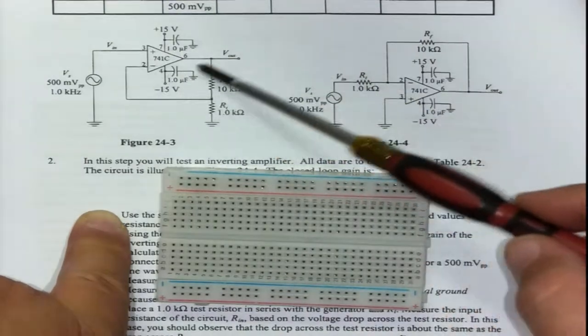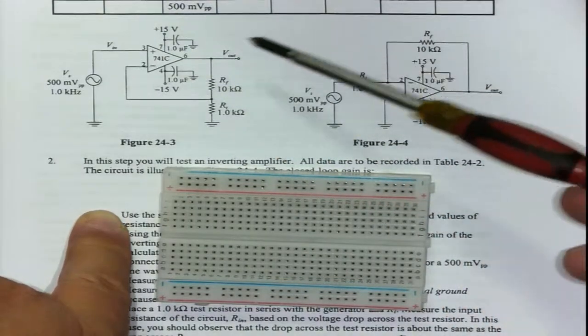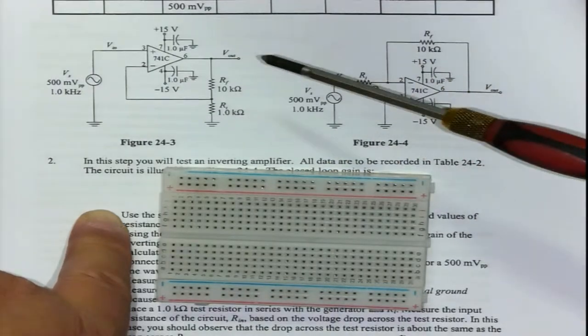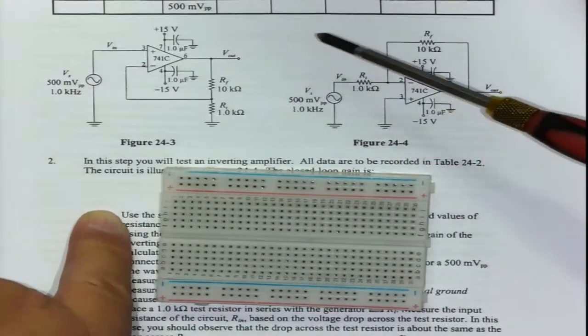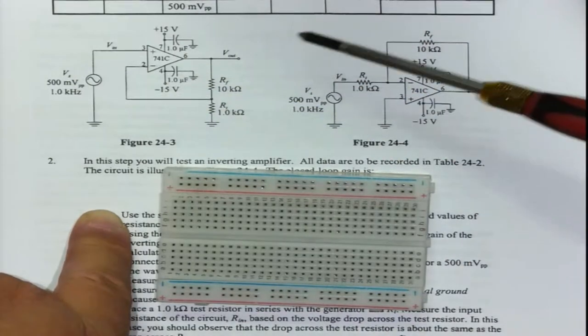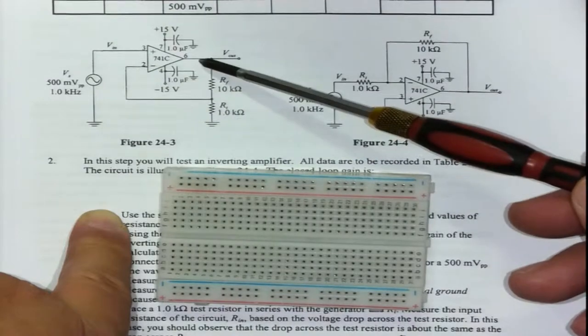Five is not used, six we use as an output, seven is plus fifteen, and pin eight is also not used. There are two pins on this IC that we actually never use, depending on which model you're using. Always check your circuit when building it.